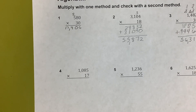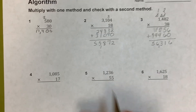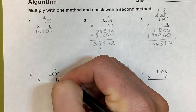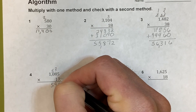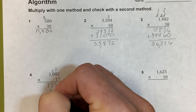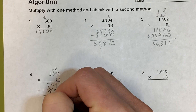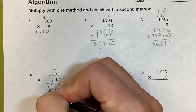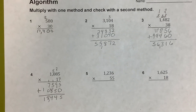Next let's do standard algorithm and check it with partial product. Starting: 7 times 5 is 35, carry my 3. 7 times 8 is 56 plus 3 is 59, carry my 5. 7 times 0 is 0 plus 5 is 5. 7 times 1 is 7. Moving to tens, add a 0: 1 times 5, 1 times 8, 1 times 0, 1 times 1. Adding: 5 plus 0 is 5, 9 plus 5 is 14 carry 1, 6 plus 8 is 14, 7 plus 1 is 8, giving 18,445.